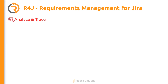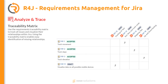Your options to analyze the relations between issues are limited with standard Jira. Tracing from a customer requirement to the user acceptance test is a manual and time-consuming effort. To save your time, R4j offers two options. The traceability matrix gives you a two-dimensional X-Y diagram to analyze the connections between two different sets of issues. You get all important customer requirements related to their tests with the different link types in between.